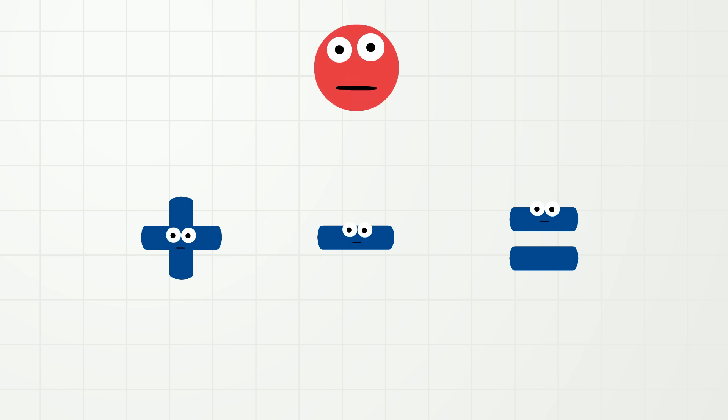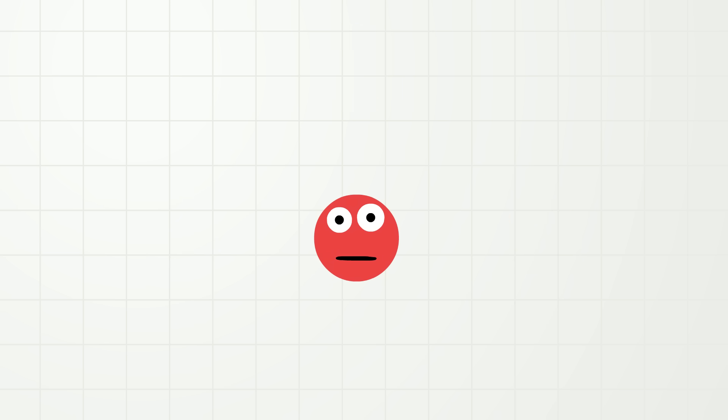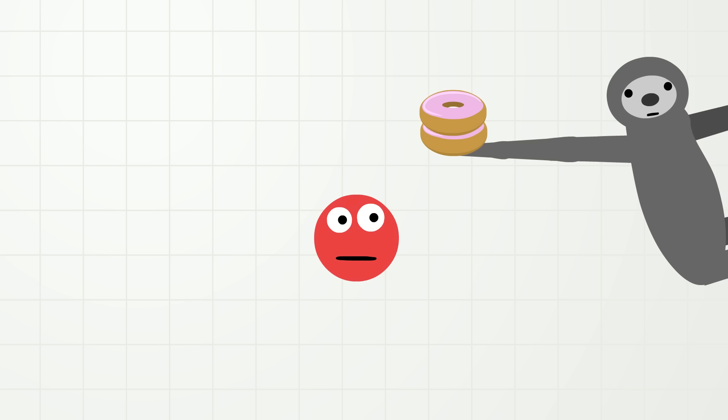So let's add and subtract the same number of donuts with sloth, but this time also write the numbers and the signs! Ready? Of course you are! Sloth? Sloth! Finally!